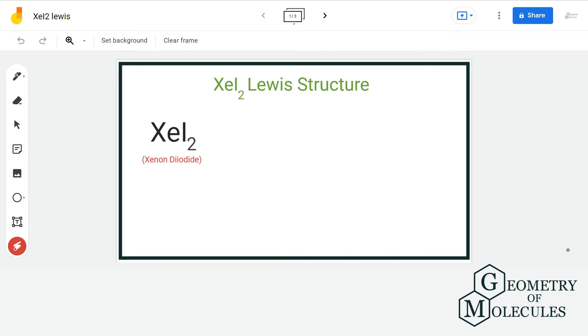Hello guys, welcome back to our channel. In this video, we will discuss the Lewis structure of XeI2. It's a chemical formula of xenon diiodide.